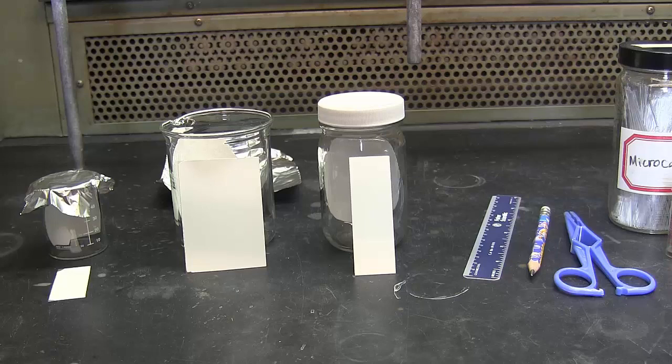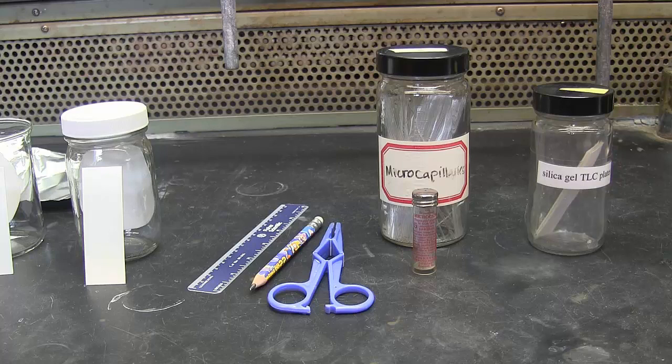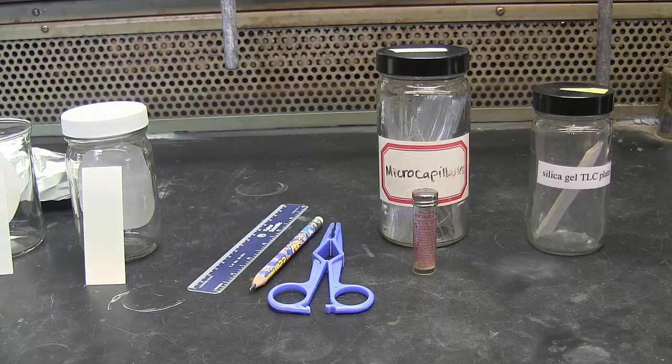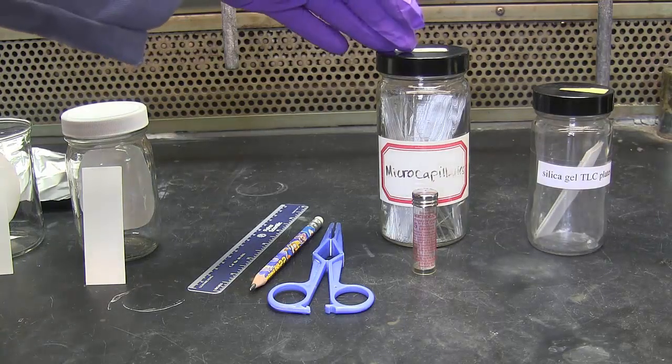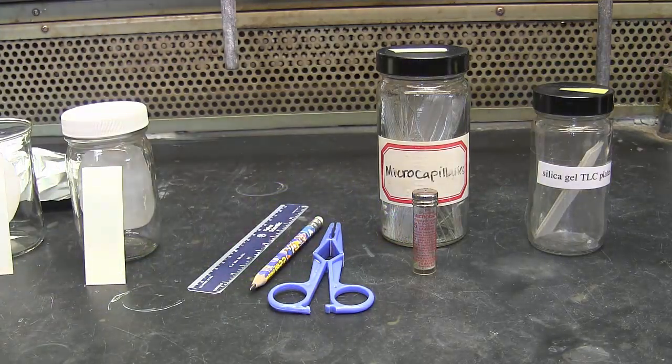Other things you will need to gather include a ruler, a pencil, a pair of tweezers, and something to make spots on your TLC plate. You can use either micro capillaries or micro pipetters. My personal preference is the micro pipetters.